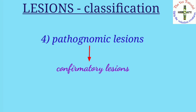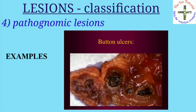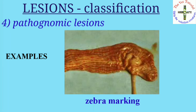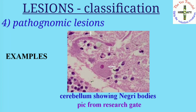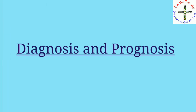The fourth type is pathognomonic lesions — these are confirmatory lesions by which we can identify the type of disease an animal is suffering from. Examples include button-shaped ulcers in the large intestine in swine fever, zebra marking of the large intestine in rinderpest, and Negri bodies in the cells of the hippocampus and cerebellum in rabies.